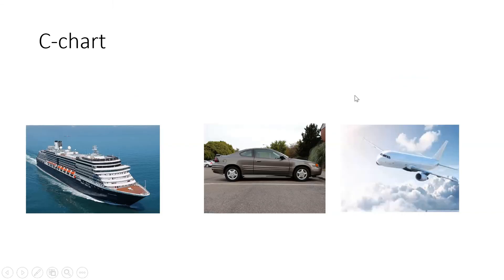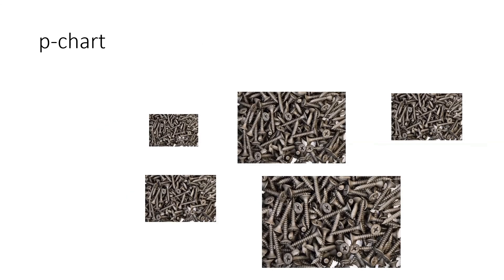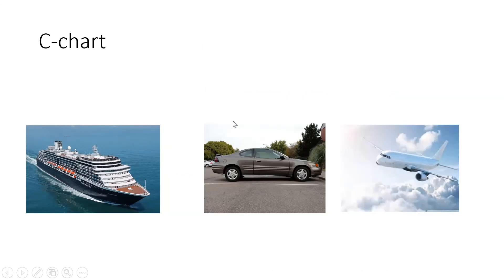Binomial is basically when we are interested in a small, just a single number inspection and then see if it is defective or not. That is a situation for binomial and we do p-chart or np-chart. NP-chart if the sample size is fixed; if it's not, then we do p-chart.